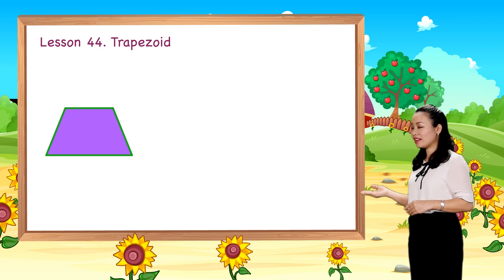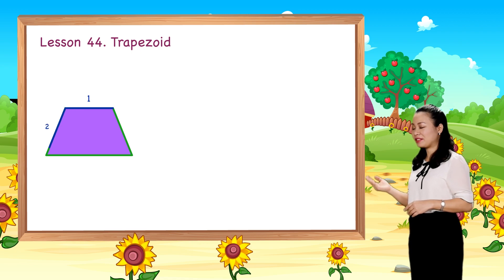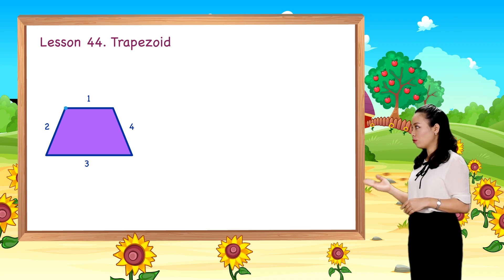How many sides does a trapezoid have? It has four sides. How many corners does a trapezoid have? It has four corners.